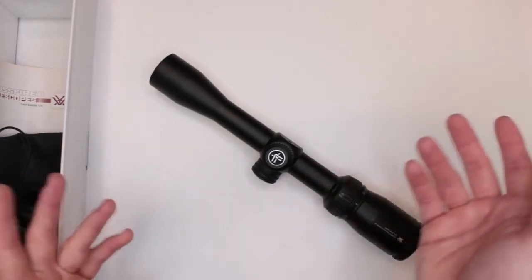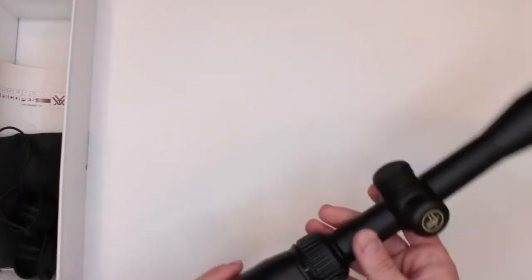So really all you need to do is get the one inch rings and that's it. You can mount it to your picatinny rail or whatever mount you have for your rifle. You know most of them are picatinny rails.